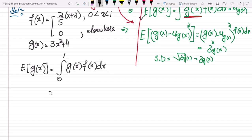Let me put these values. So it would be 0 to 1, g of x is 3x square plus 4 and f of x is 2 multiplying it inside, so I will get 2x plus 4 divided by 5 dx.